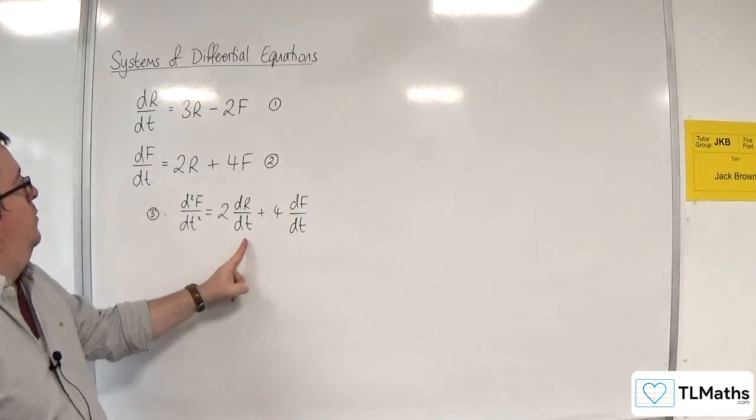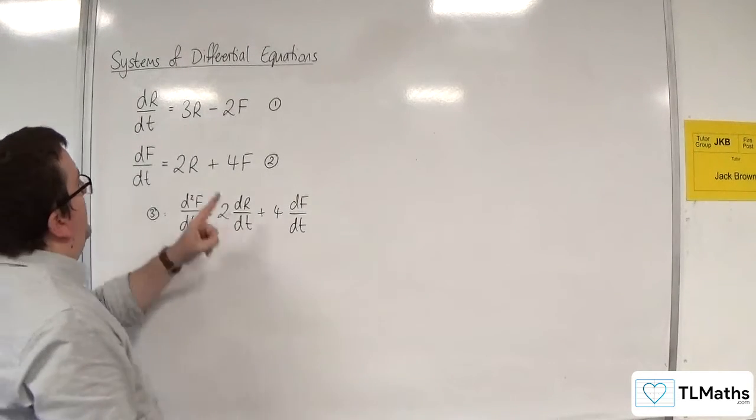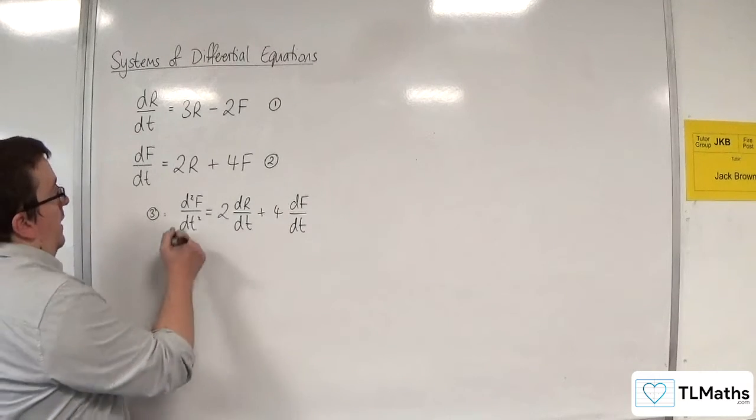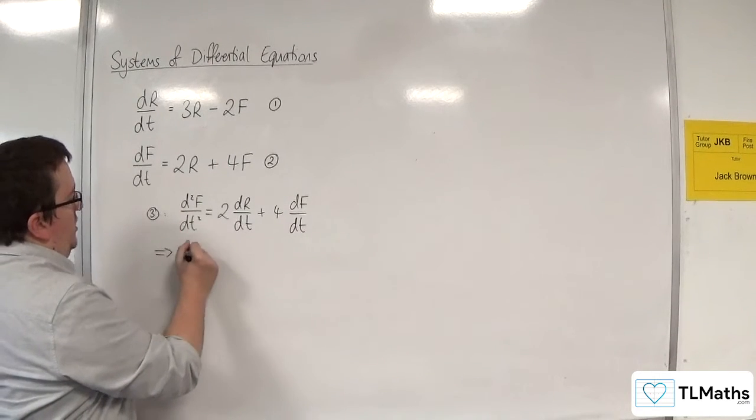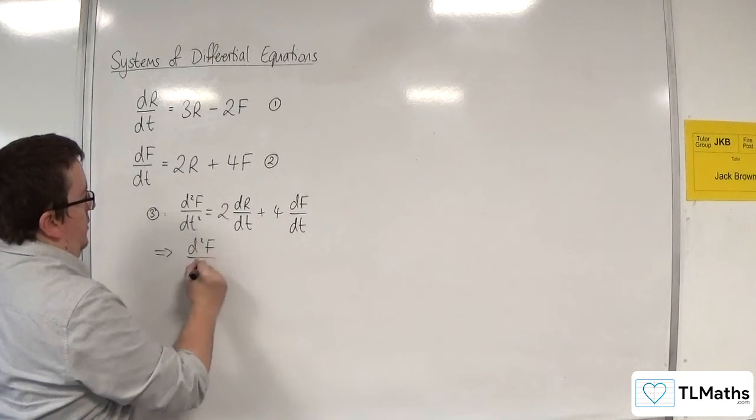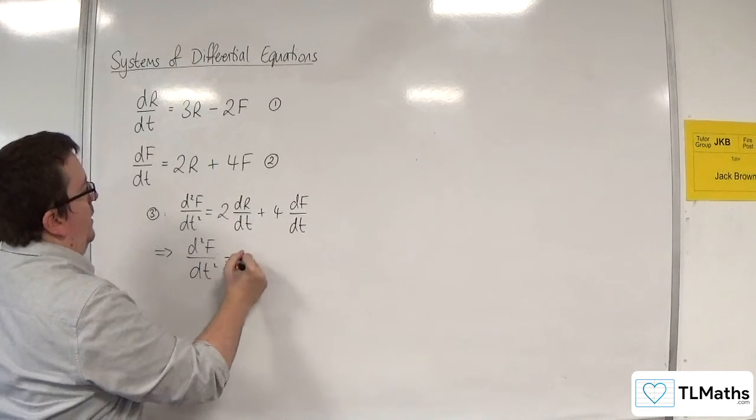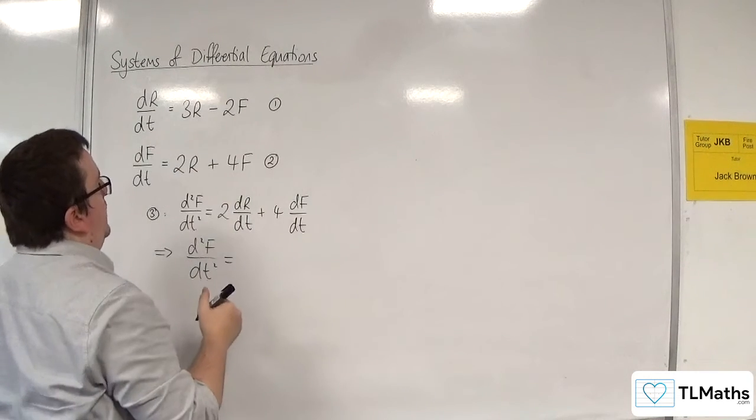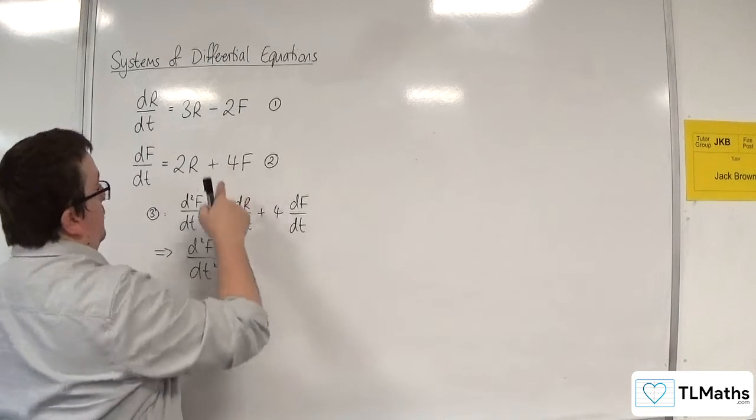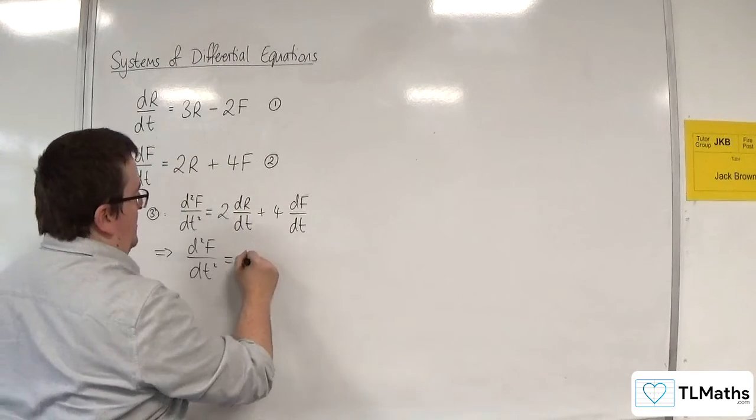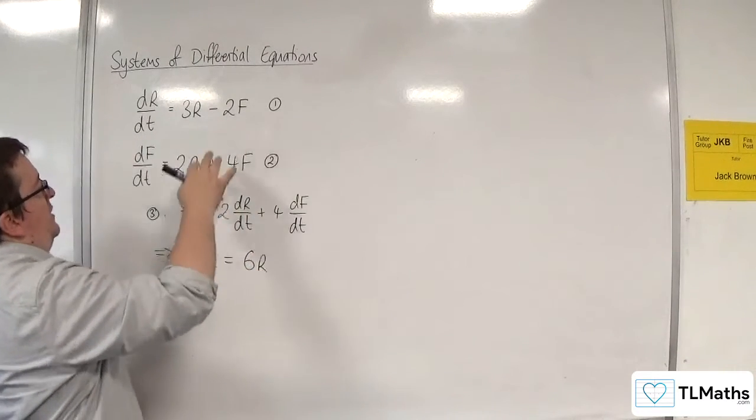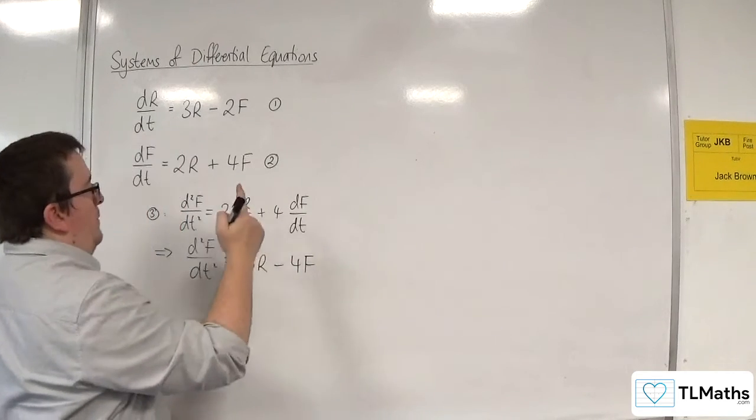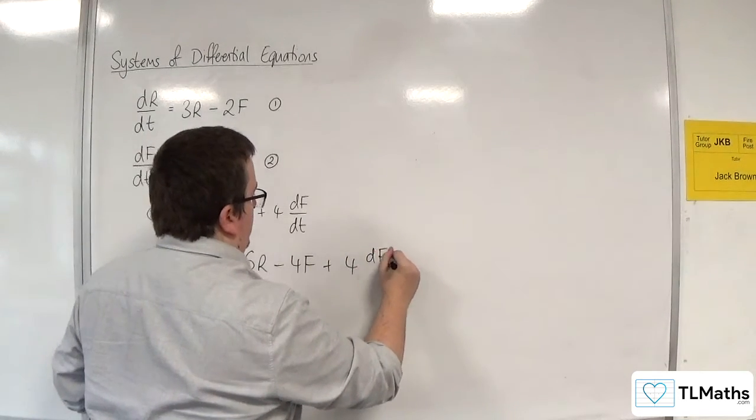Now, I know that dR/dt is 3R take away 2F from equation 1. So what I could do is I could replace the dR/dt with this. So 2 lots of 3R take away 2F. So 2 lots of 3R, so 6R. And then 2 lots of minus 2F, so minus 4F. And we've got the plus 4 dF/dt.